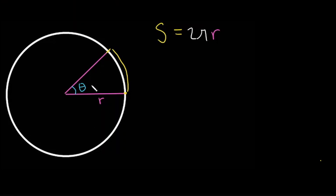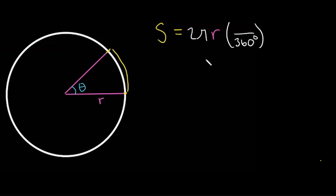Let's first look at it in degrees. A fraction is part over whole. The whole would be the angle around the entire circle, which is 360 degrees. And our part would be the angle theta. So our fraction would be theta over 360. Then we'd multiply that fraction by our circumference 2πr, and we get our arc length.